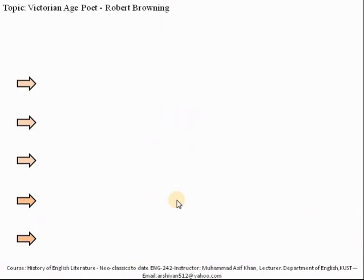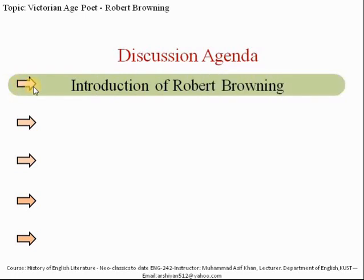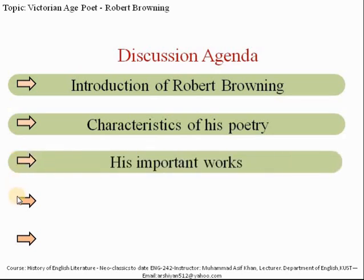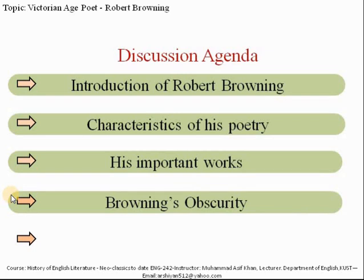Dear students, the outline of the main points we are going to discuss in today's lecture is: first, I will introduce you to the important poet Robert Browning, then we will discuss the main features of his poetry, followed by a discussion on his important works, after which I will give you brief information about the obscurity of Robert Browning's poetry, and in the end a comparison of Robert Browning and Alfred Tennyson, concluding the lecture.